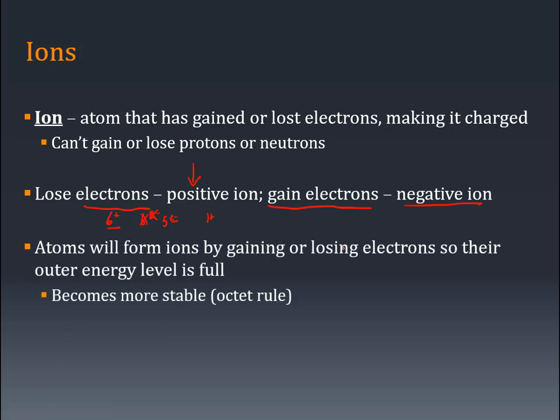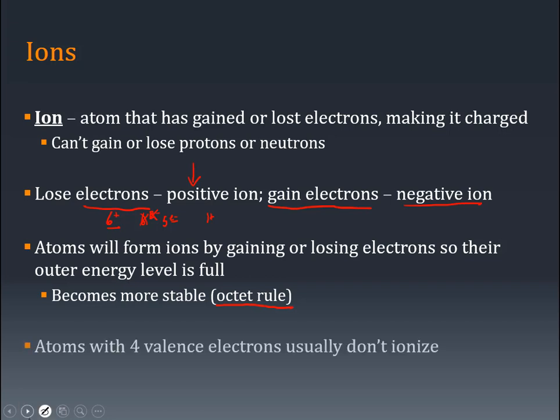Atoms form ions by gaining or losing electrons so their outer energy level is full. Remember we're trying to obey the octet rule. The octet rule says that atoms are stable when they have eight valence electrons, when they have their last energy levels full. That makes the atom stable.